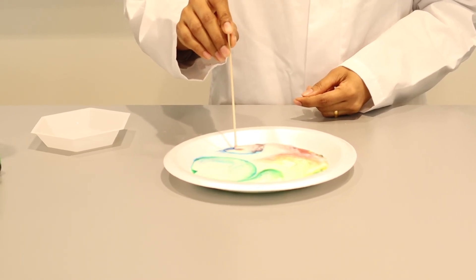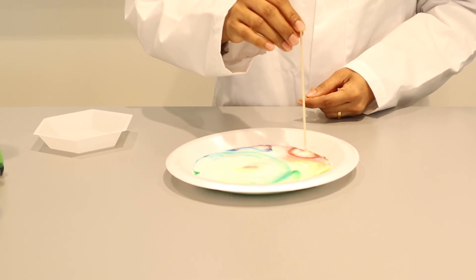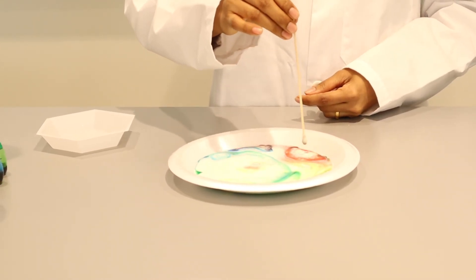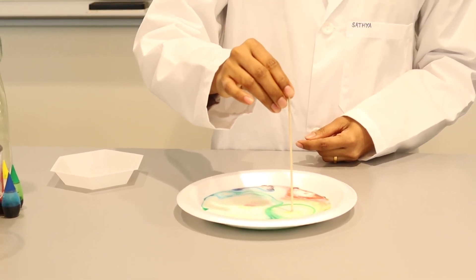Now you can see at first the milk and the food coloring won't dissolve. But after adding dishwasher soap, it mixes up with the food coloring and the milk.